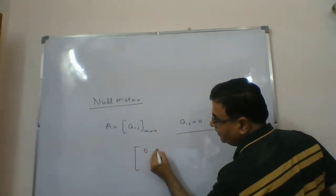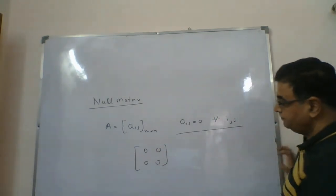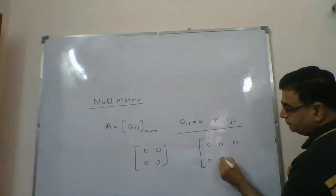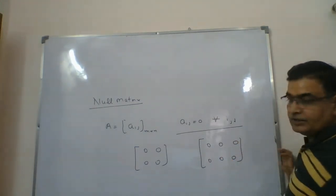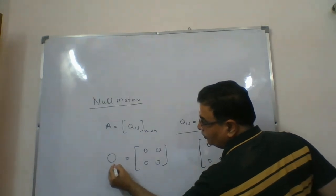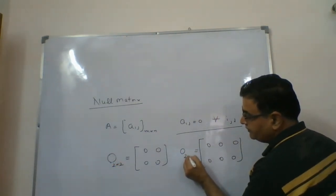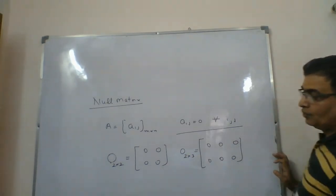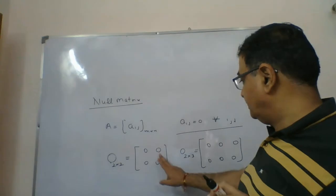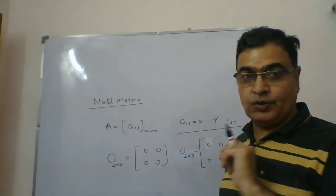For example, this will be a null matrix denoted by O, 2 by 2. This will be a null matrix, 2 by 3. So a null matrix means a matrix of any order which has each and every element equal to 0.